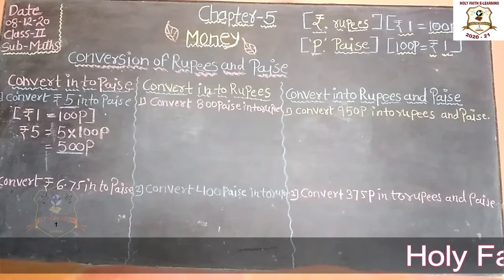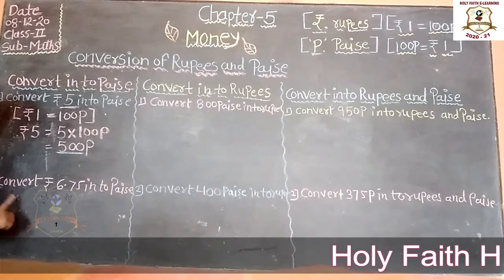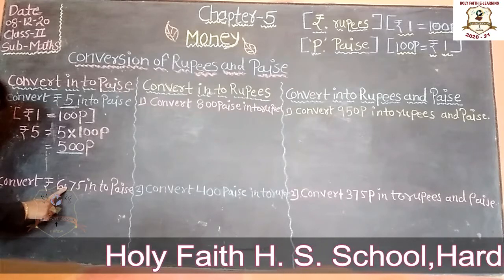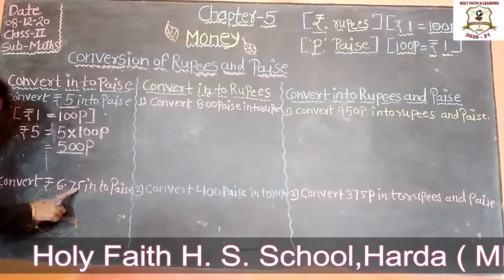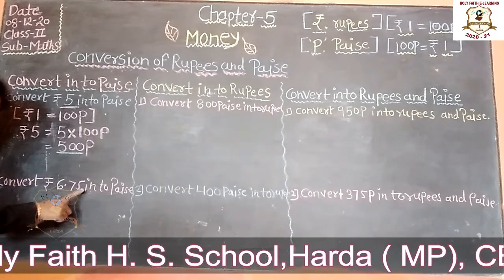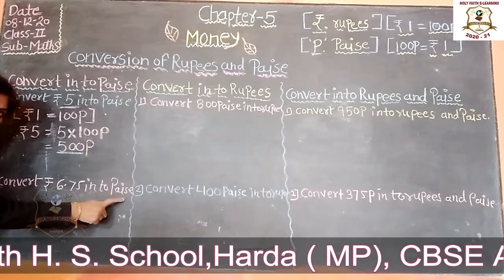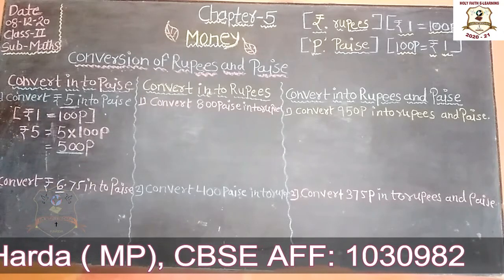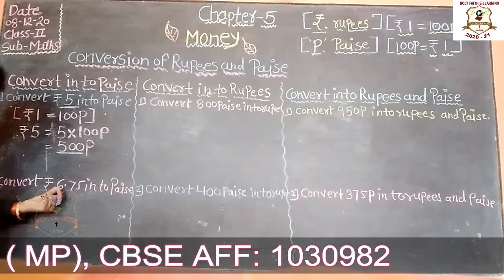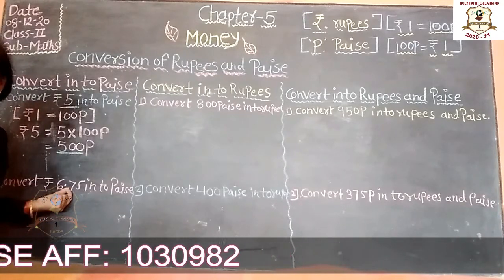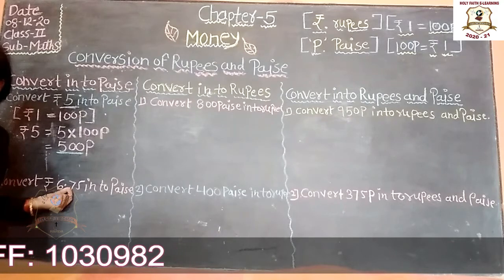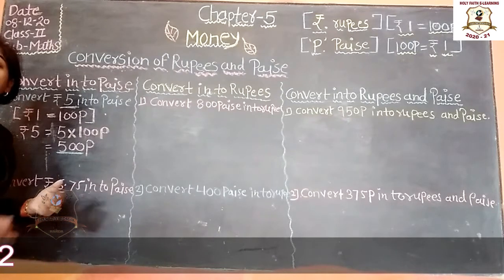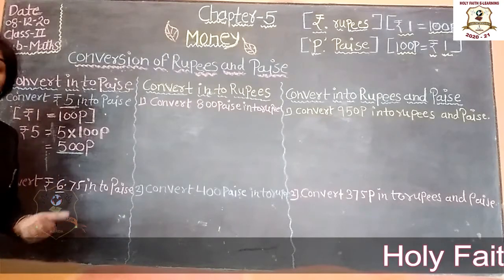Now take one more example. Look here. Convert rupees 6.75 into paise. As I explained in the previous video, in this video, why do we use a dot? A dot is used to separate the rupees and paise.